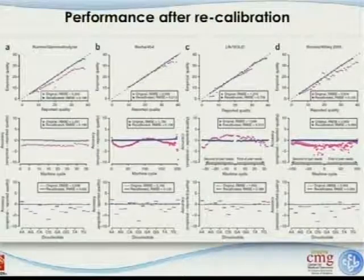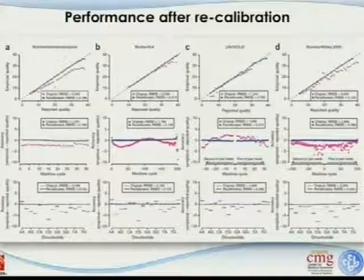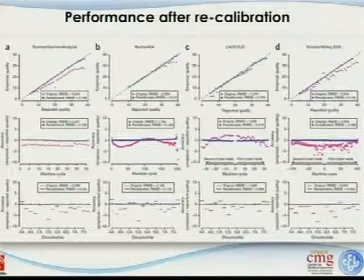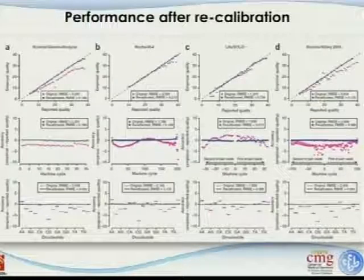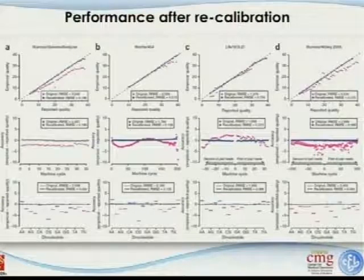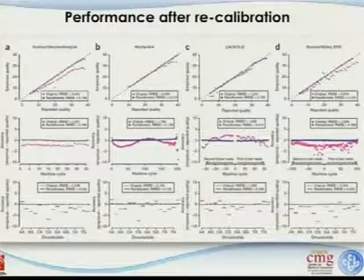Looking at performance after recalibration: the blue dots represent recalibrated values, the purple ones are the pre-recalibration reported values. After recalibration, most things go back to where they should be on the 45-degree line. For machine cycle and dinucleotide covariates, everything comes back around the zero line.